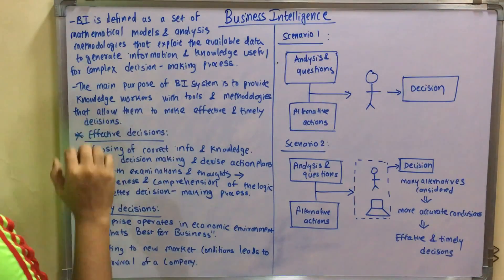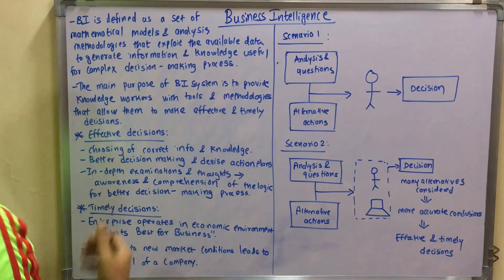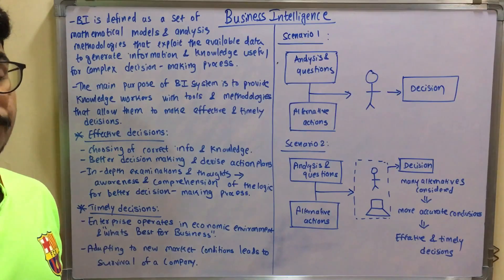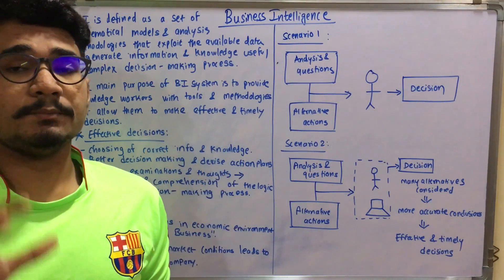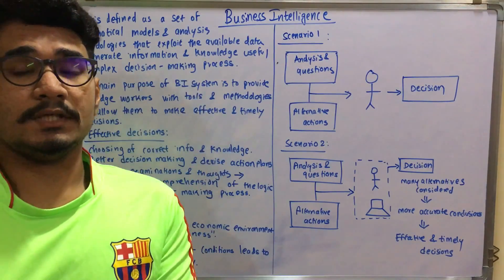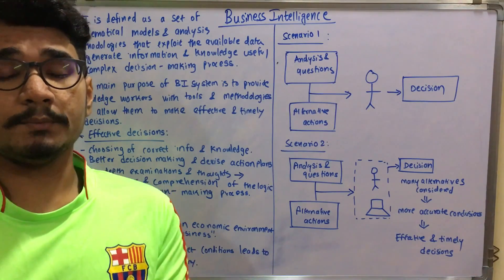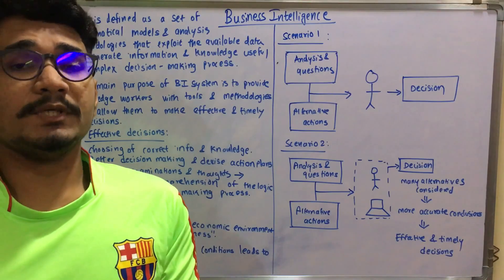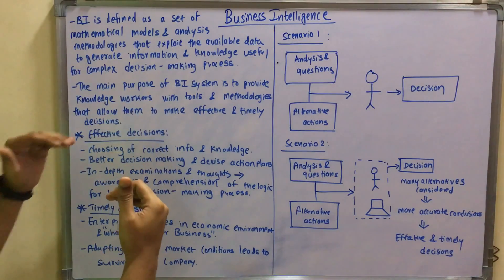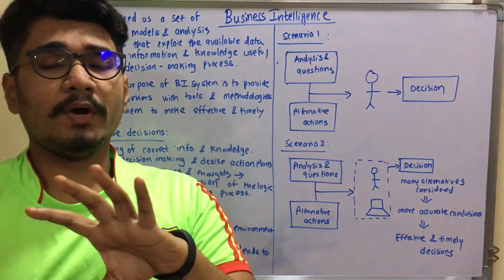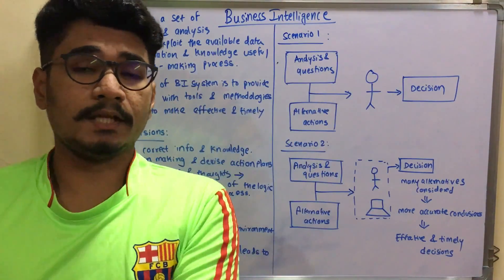We have two key points: effective decisions and timely decisions. For effective decisions, you must choose the correct information and knowledge. This begins right from the first stage — cleaning the data, removing noise and outliers, and properly processing it. This leads to three key terminologies: data, information, and knowledge.